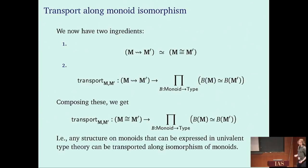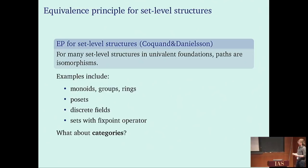So to summarize: we have transport defined from the path type, and we have shown the path type between monoids is equivalent to the type of isomorphisms. Composing these, we get a transport that allows us to transport any structure B across an isomorphism of monoids. Put differently, we cannot express constructions on monoids that do not transfer across a monoid isomorphism. The same reasoning works for all sorts of set-level structures.